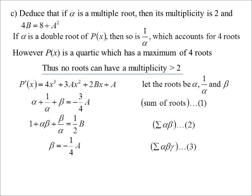Okay, let's play with it. Sum of the roots will be alpha plus 1 on alpha plus beta. That turns out to be minus 3 quarters A. So, there's the sum of the roots taken one at a time. If I do it two at a time, we get 1 plus alpha beta plus beta on alpha and that will be a half B. And then, product of the roots, so three at a time, we simply will get beta is equal to minus a quarter A.